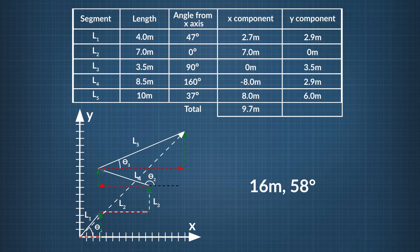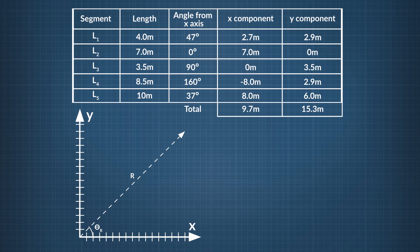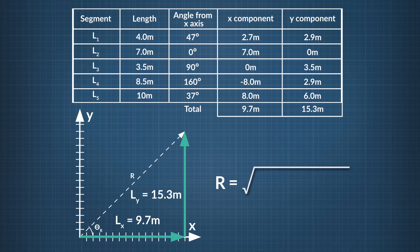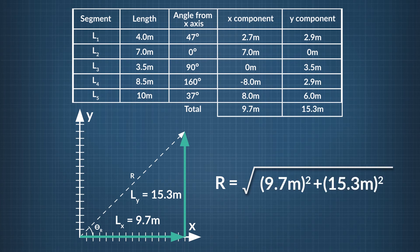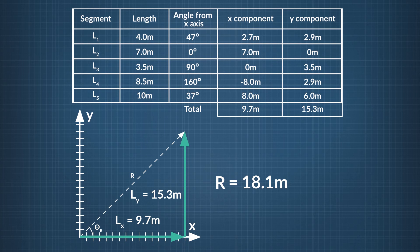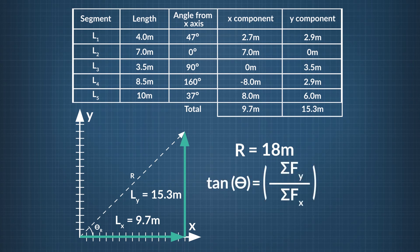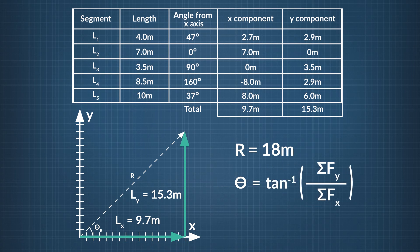and the sum of the y components is 15.3 meters. We can use these numbers to solve for the overall magnitude of the direction of the dog's motion. R, the magnitude of the resulting vector, equals the square root of the sum of the x components squared plus the sum of the y components squared. Plugging in our components, we find that r equals 18.1 meters, or, using significant figures, 18 meters. To find the angle, the tangent of the overall angle of this vector theta equals the y component divided by the x component. If we take the inverse tangent of both sides, then theta equals the inverse tangent of y over x. Plugging in our values, we find that theta is 58 degrees with respect to the positive x axis.